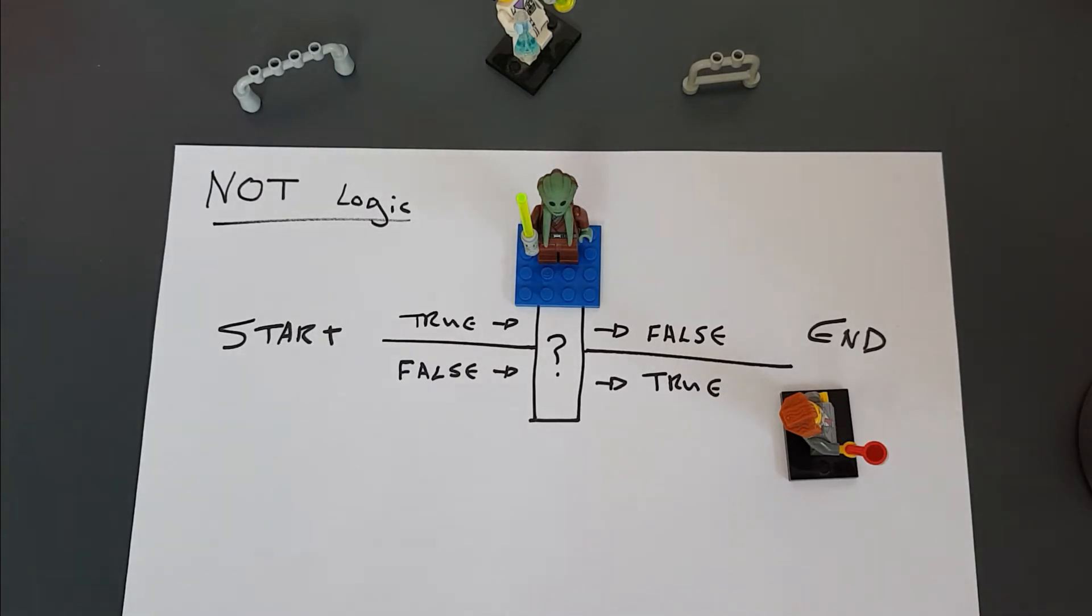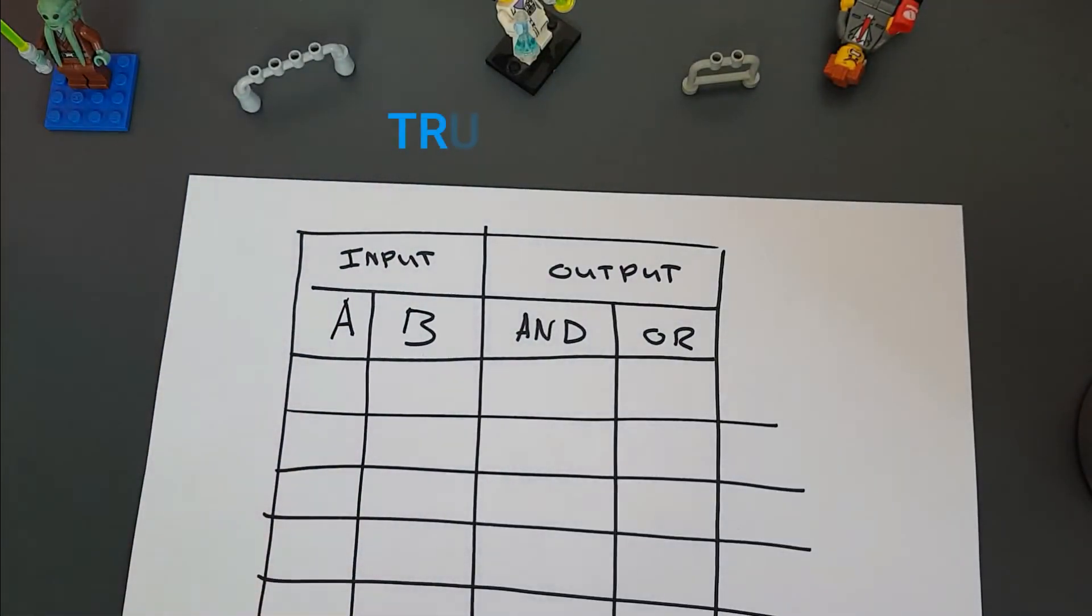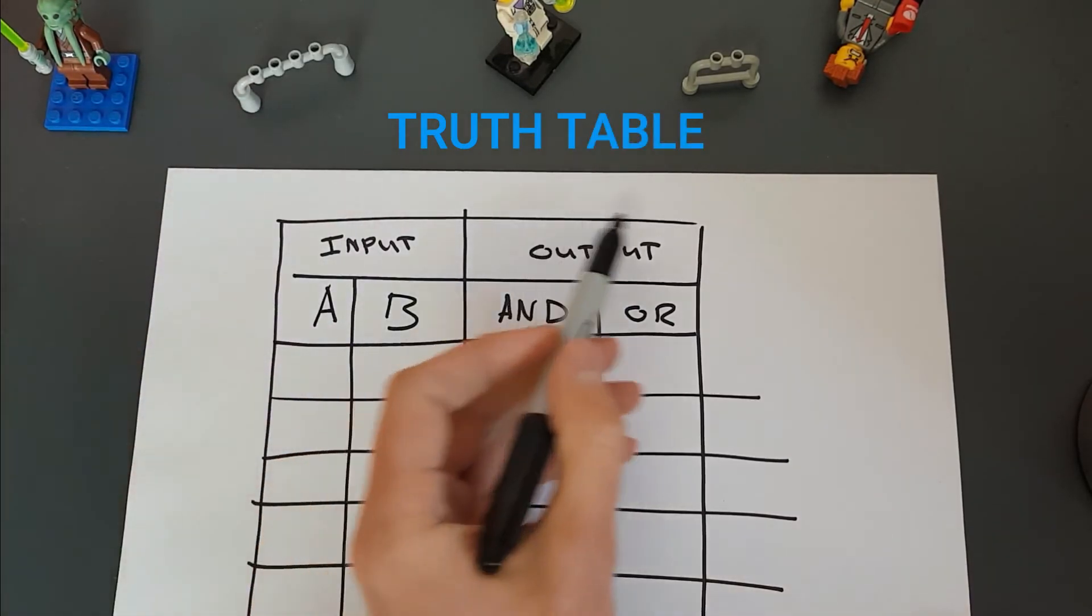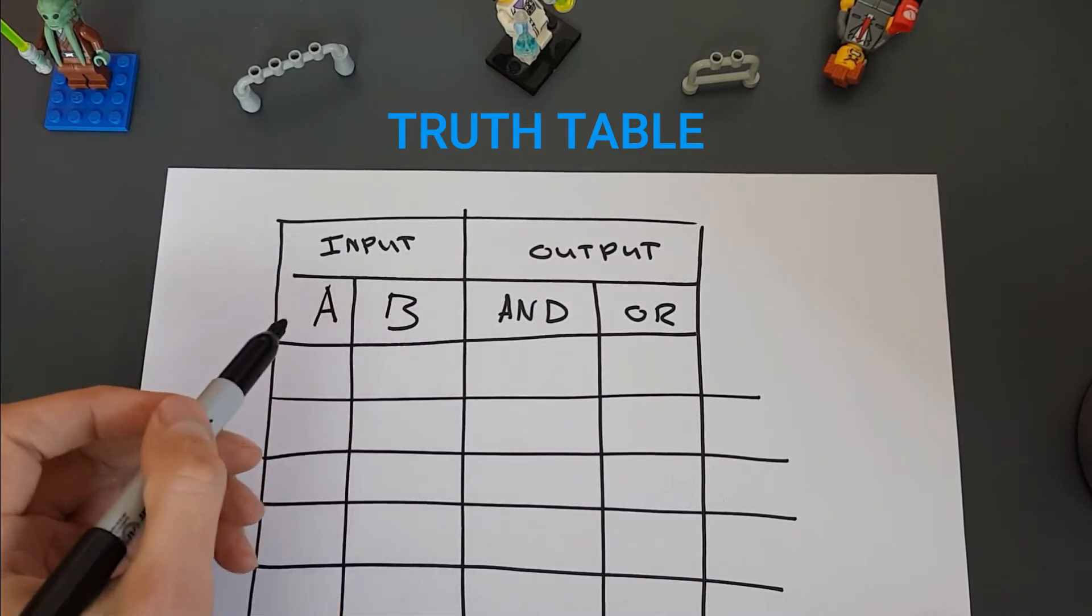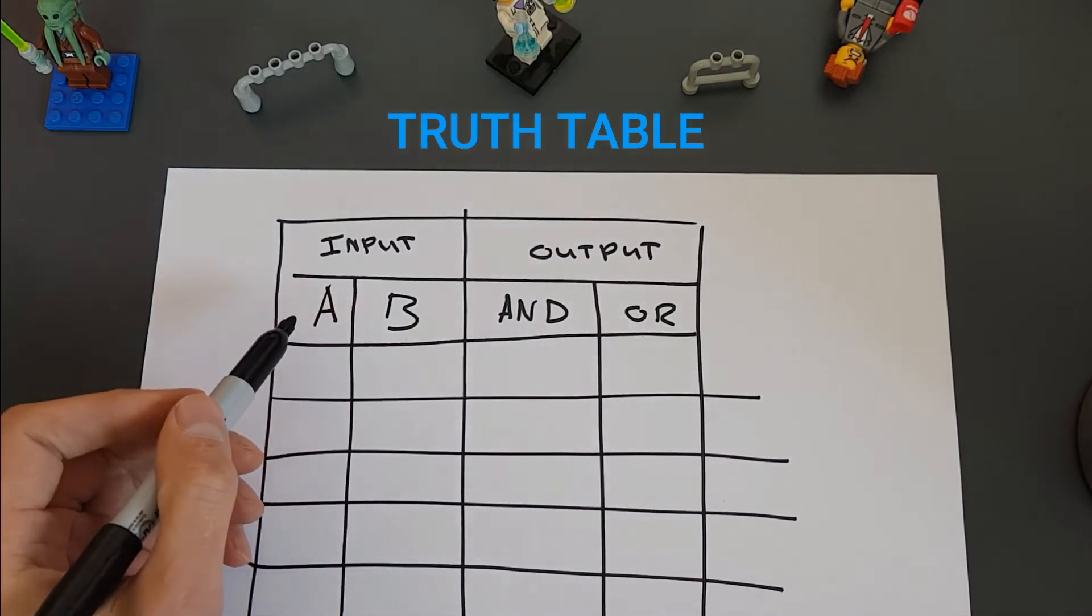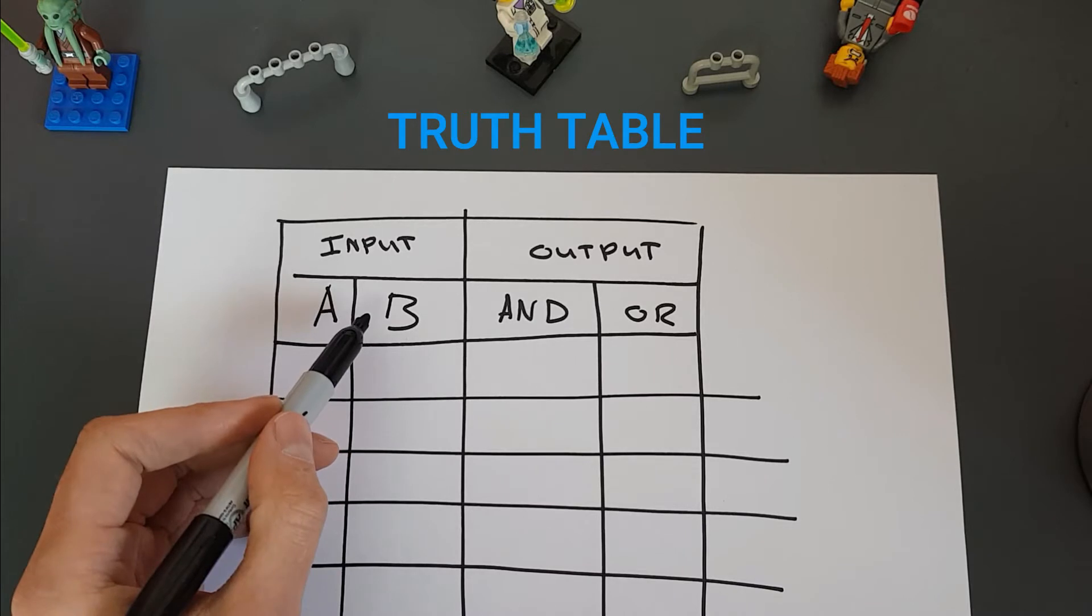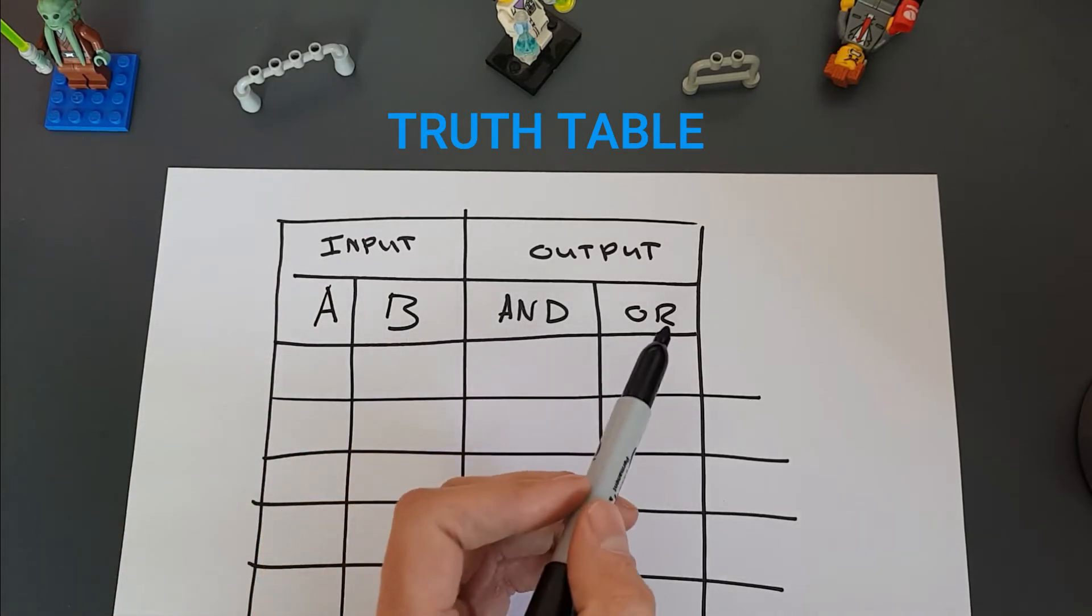We can also represent all of this on a truth table, which looks like this. So we've got the INPUT and the OUTPUT. So that's the start and the end. Then we've got our CONDITIONS. So we don't only have to have two CONDITIONS, we could have more than that, but for simplicity's sake we're just going to have A and B. So that's CONDITION 1 and CONDITION 2. And then we've got our LOGICAL OPERATORS here, so that's AND and OR.